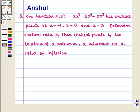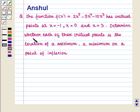Hello and welcome to the session. In this session we are going to discuss the following question: the function f(x) = 2x⁵ - 5x⁴ - 10x³ has critical points at x = -1, x = 0, and x = 3. We need to determine whether each of these critical points is the location of a maximum, a minimum, or a point of inflection.